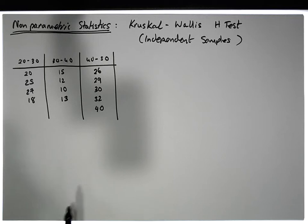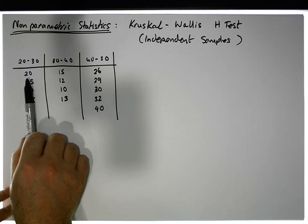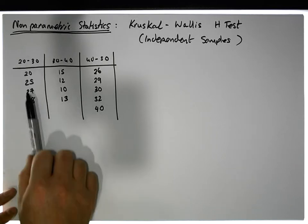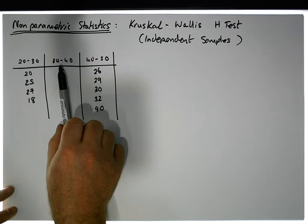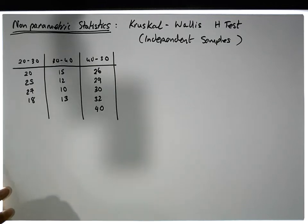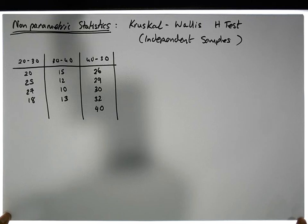And the question that we have is whether there's a difference in the spending behaviour of 20 to 30 year olds compared to 30 to 40 year olds and 40 to 50 year olds, or is there some pairwise difference across these particular groups?